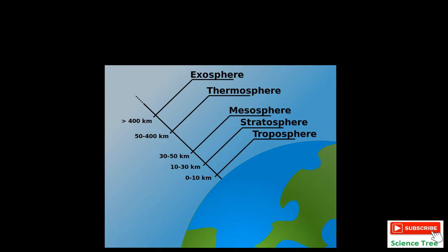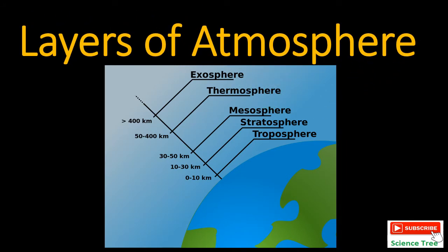By this simple picture you can easily understand the regions of these layers. Troposphere is present from 0 to 10 km, after that stratosphere from 10 to 30 km, then mesosphere — the coldest region — from 30 to 50 km, after that thermosphere from 50 to 400 km, and finally exosphere above 400 km. These are the regions for all these layers.